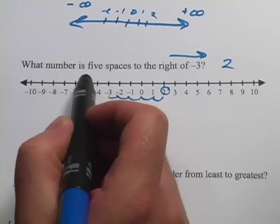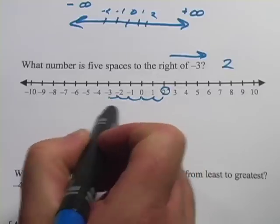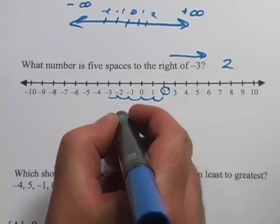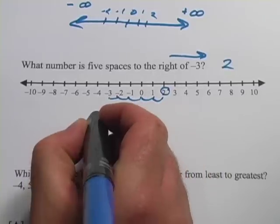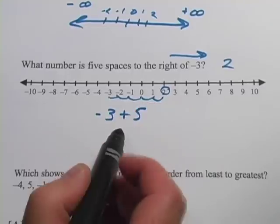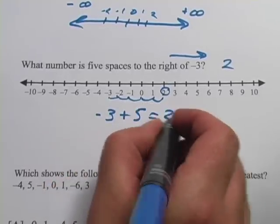But that asking what number is 5 spaces to the right - well, when you go right on the number line, that's adding. So this problem is really negative 3 plus 5, because we added 5 spaces. That equals 2.